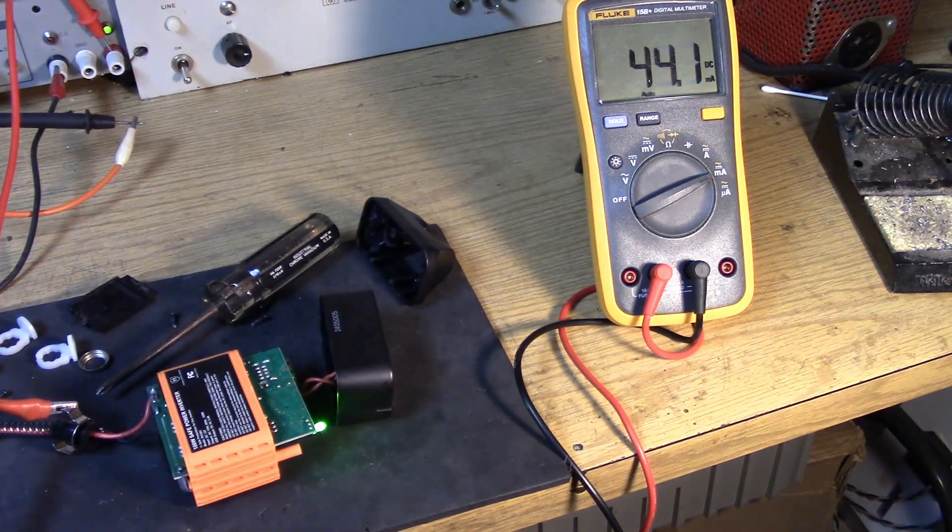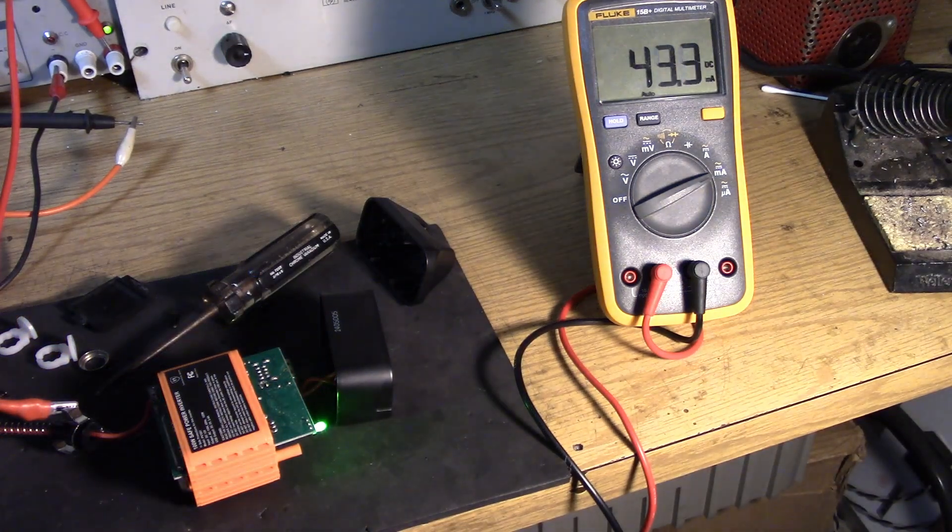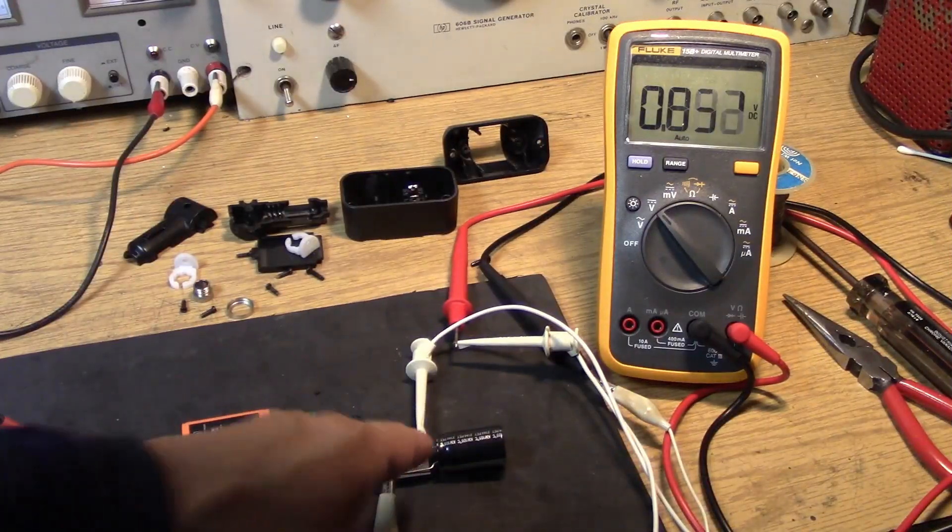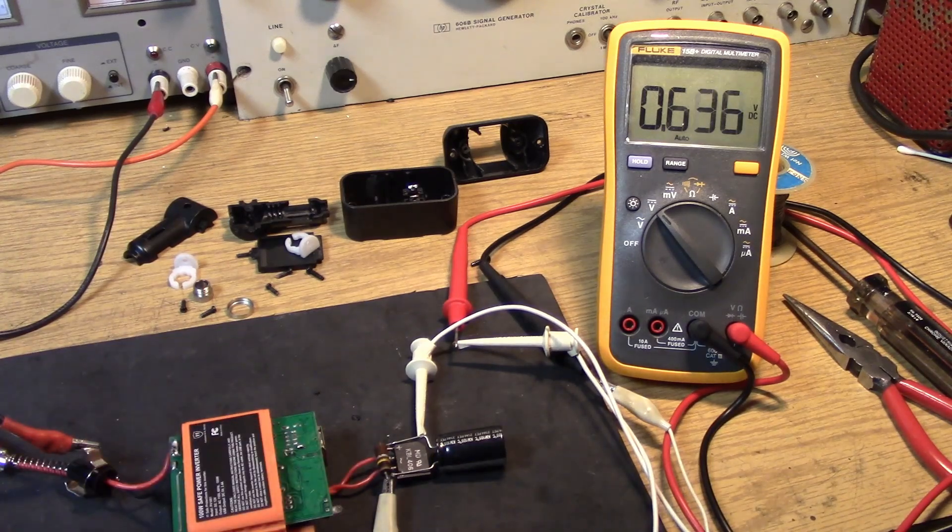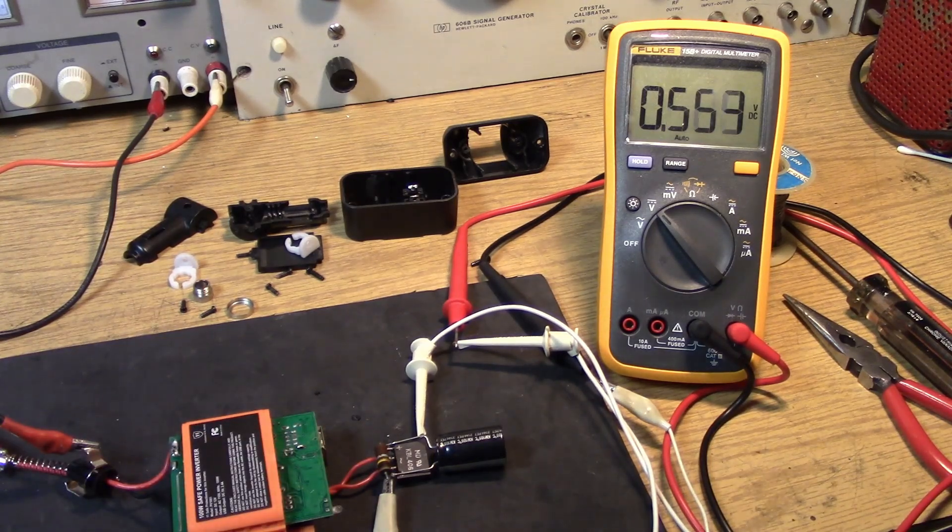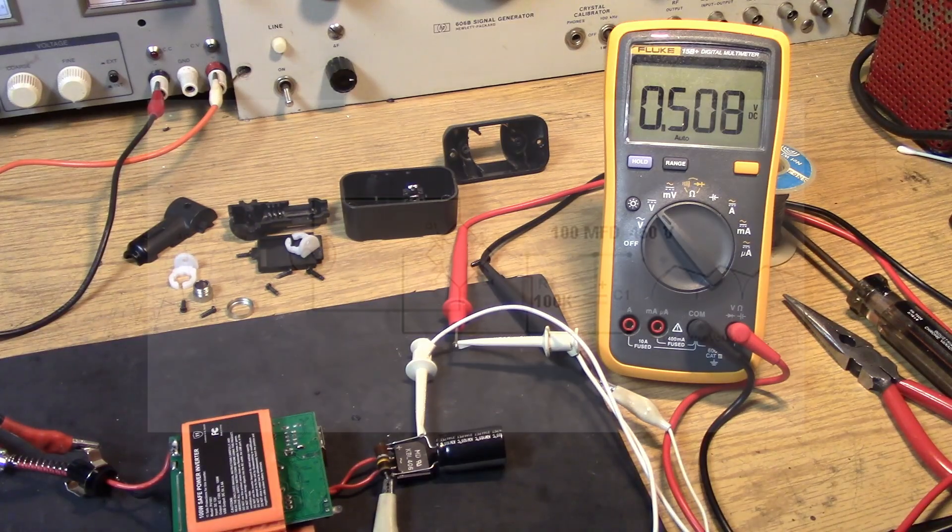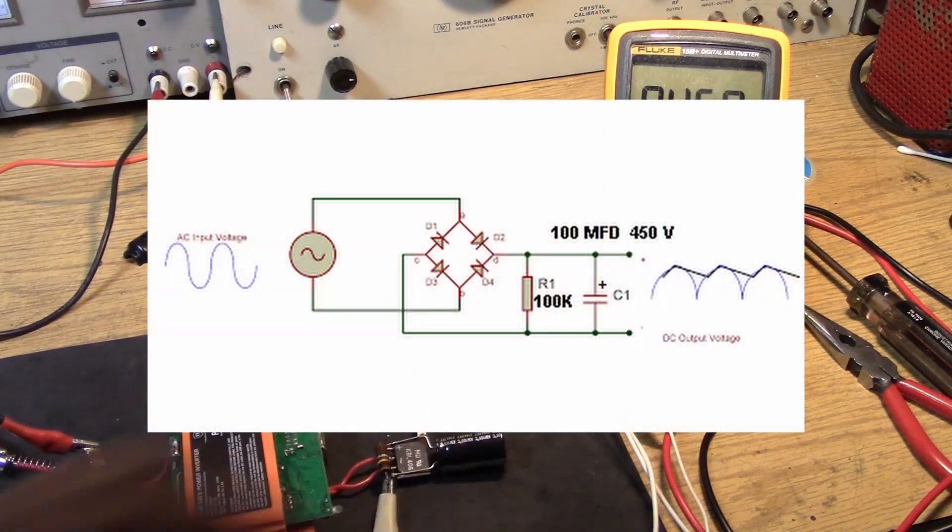So, going from transmit to receive, we'll hear this. I have a bridge rectifier. A 100k resistor as a bleeder resistor across the plus and minus terminals of the bridge rectifier. As well as the filter capacitor, which is 100 microfarads at 450 volts.